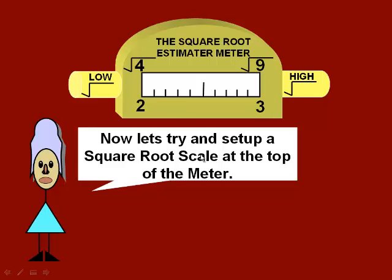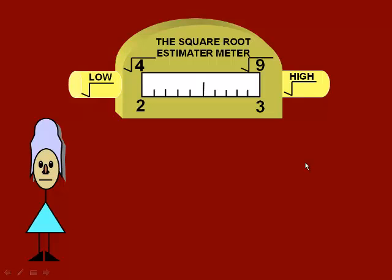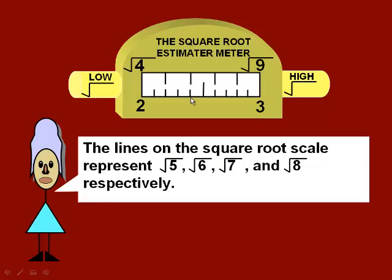Now, Ms. Dillard would like it to be more accurate. So what she wants us to do is put the missing square roots in between 4 and 9 at the top of the meter.